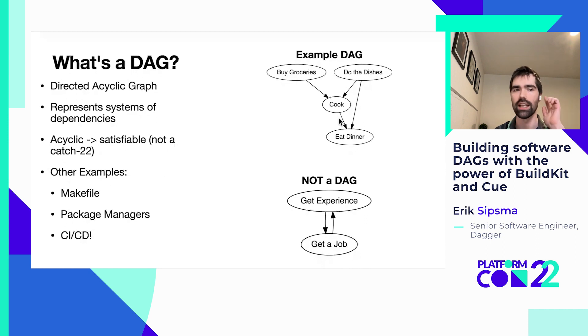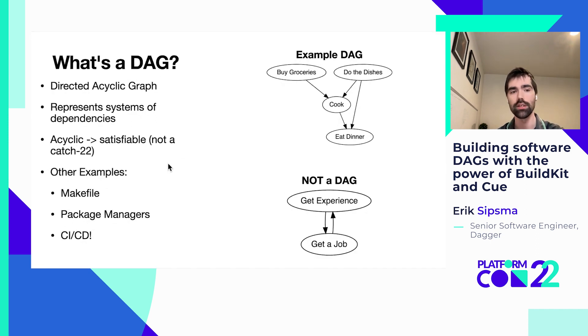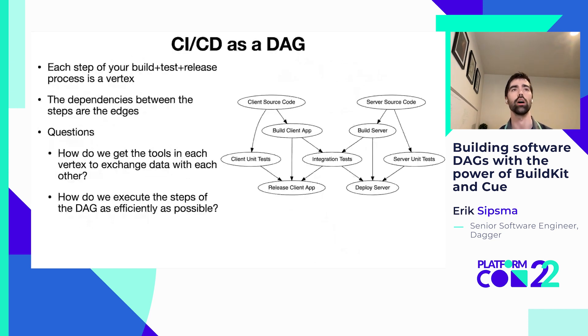The acyclic part specifically means that we want satisfiable dependencies, not circular ones. So getting a job requires getting experience, requires getting a job — that's not a DAG. It's not satisfiable; we can't deal with those. That's why we're interested in acyclic specifically. Other examples of DAGs are makefiles, package managers used in Linux distros, and CI/CD, which is what we're going to be talking about here today.